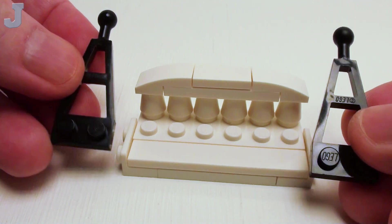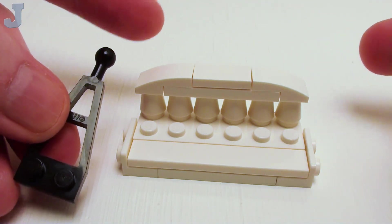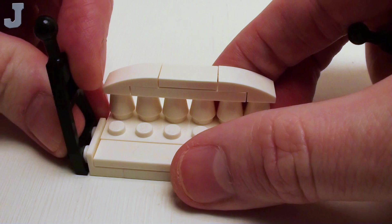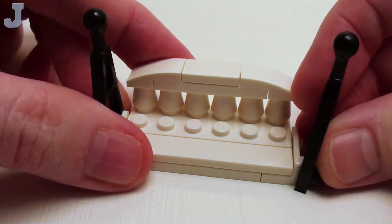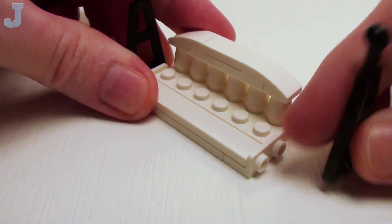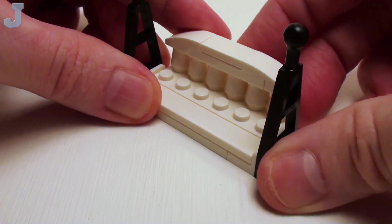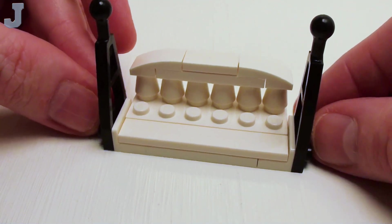Now we're going to take a pair of modified 1x2 plates that have a ball on the end. We're going to place these on both sides of our bench, right on the angular plates.